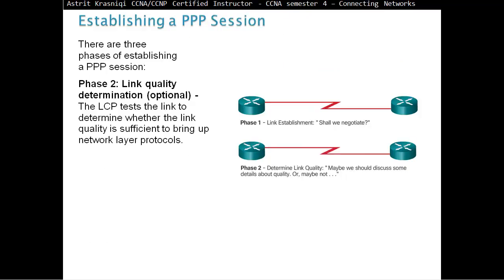Phase 2 is link quality determination. Optional. The phase 2 is optional. The LCP tests the link to determine whether the link quality is sufficient to bring up the network layer protocols. The LCP can delay transmission of the network layer protocols information until this phase is complete.